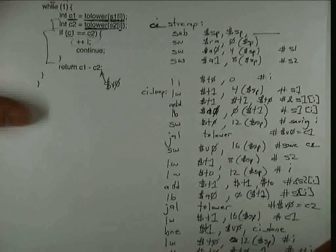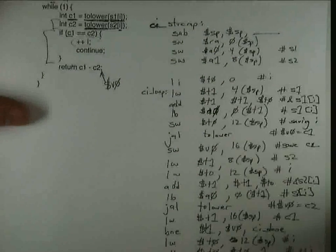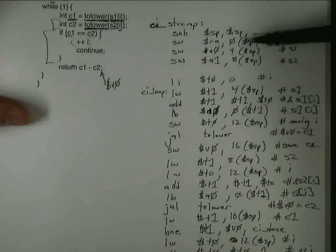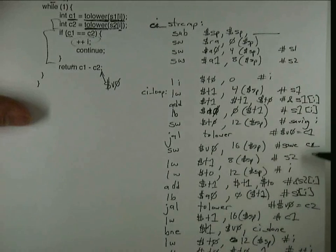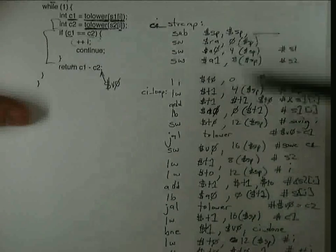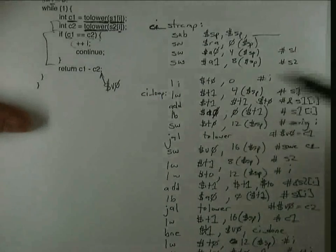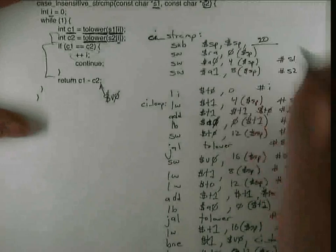And at this point, since I'm basically done, I know how many things I've saved onto the stack. And so I've saved the return address, S1, S2, I, and C2. So I've saved five things. Each of them are four bytes big. So that means my stack frame is 20 large.